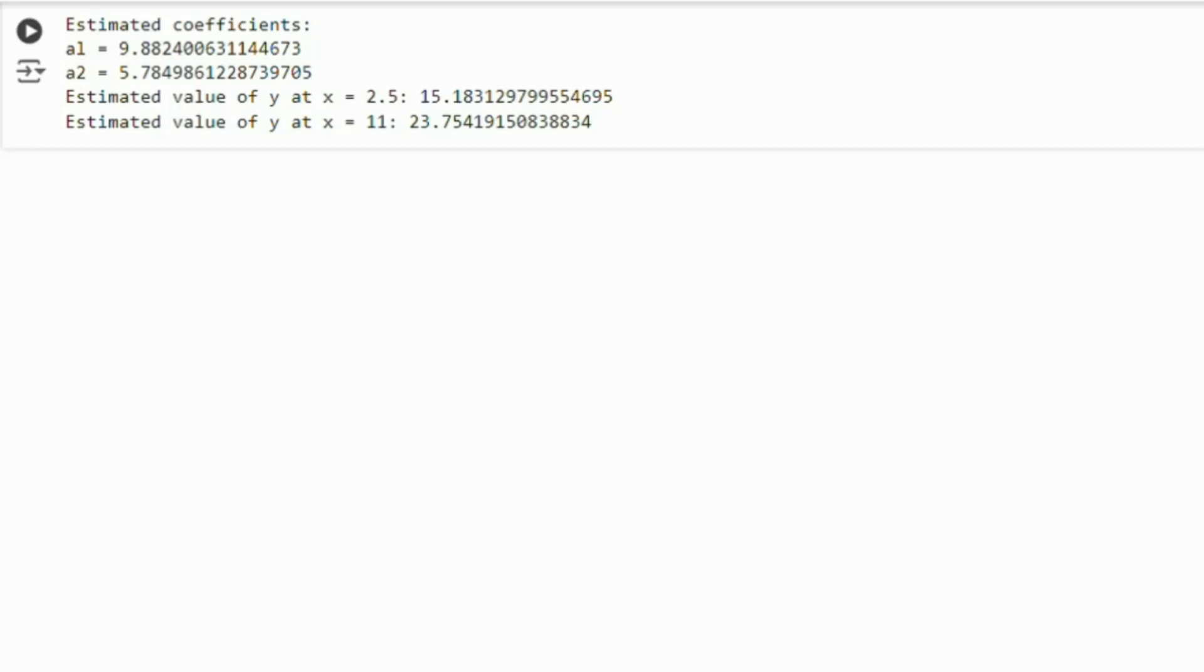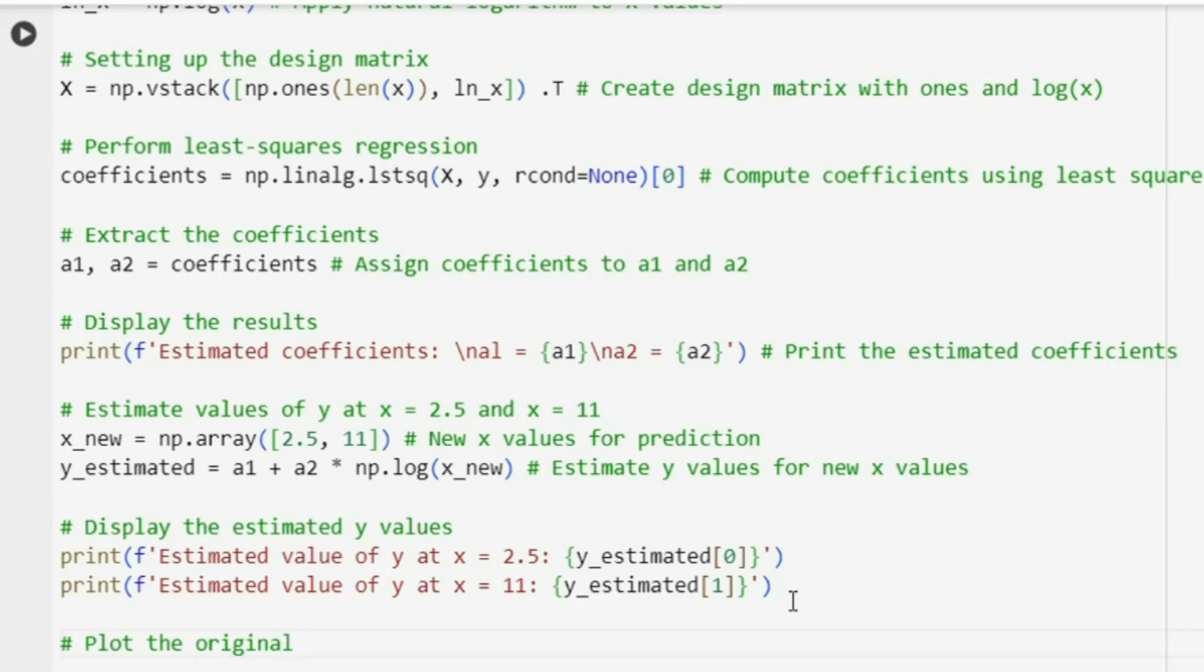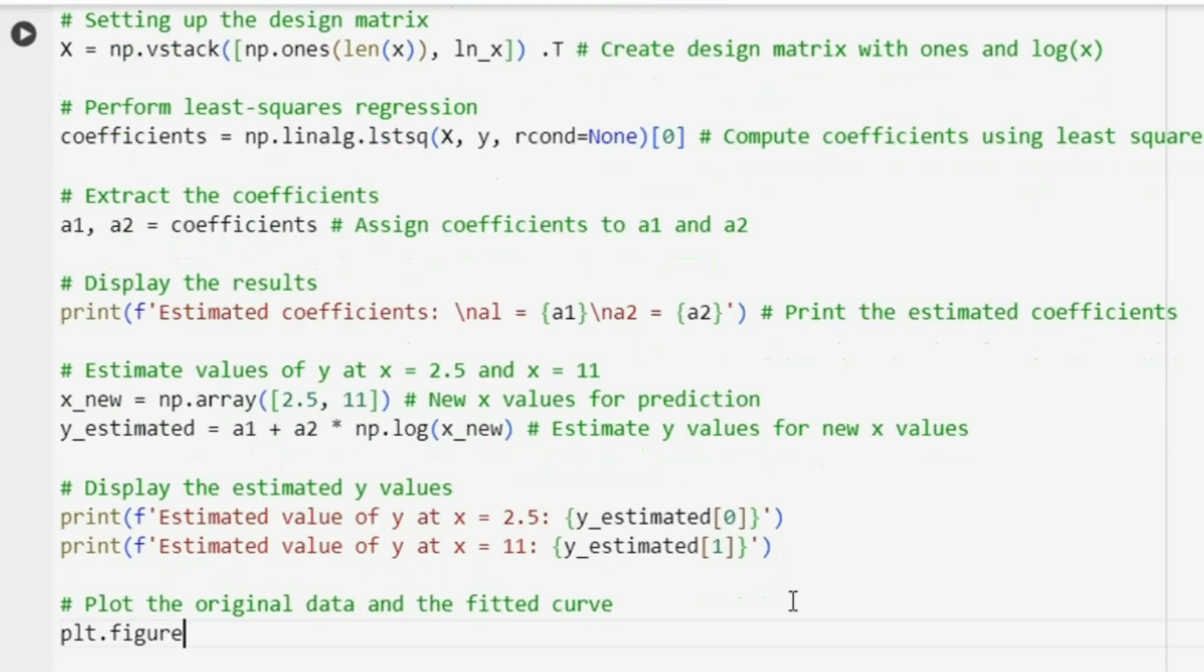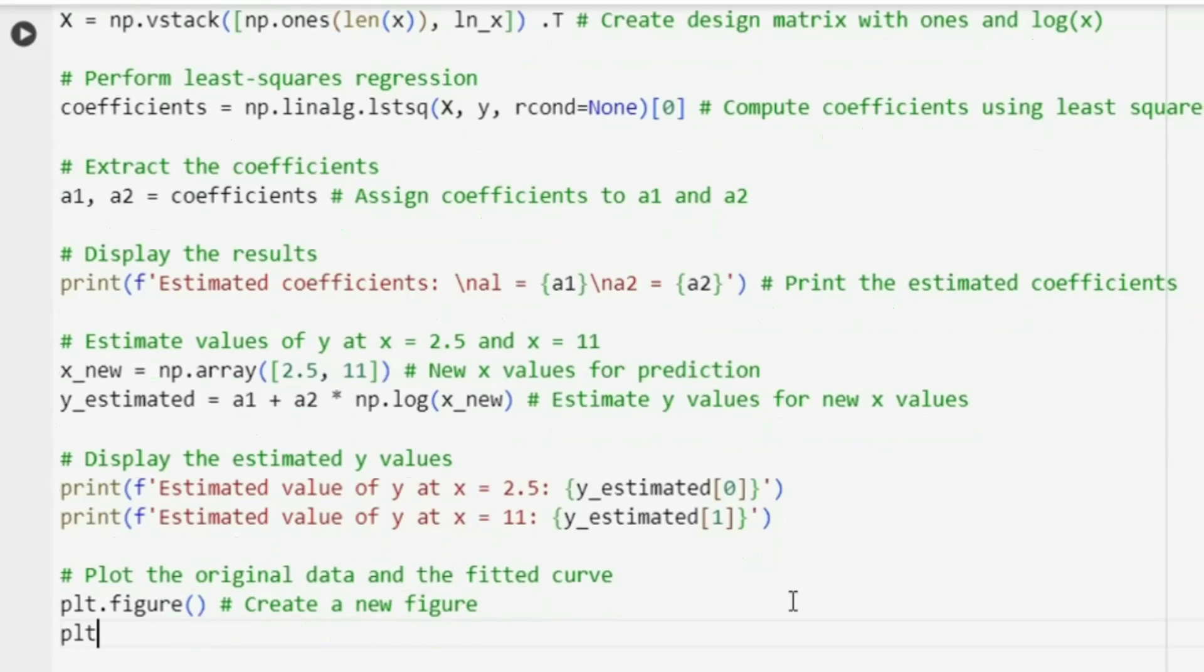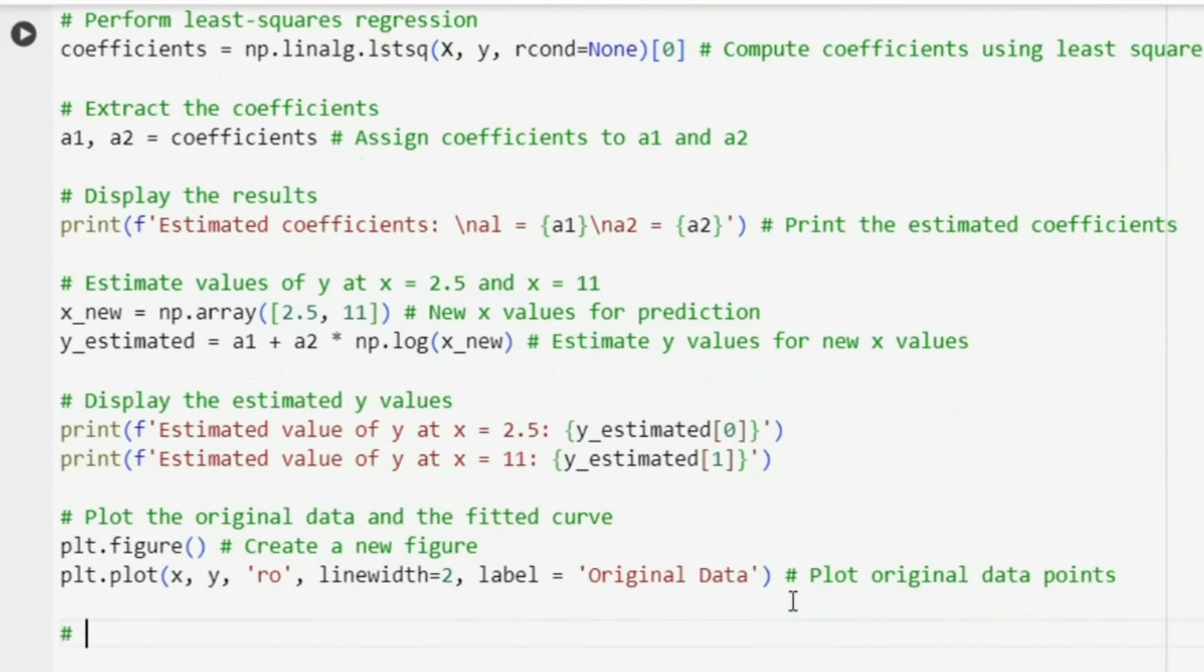This will show the estimated Y values for a range of X values between the minimum and maximum X from your data. Finally, let's visualize our results. We will plot the original data points as red dots and overlay the fitted logarithmic curve to see how well our model captures the data trend.